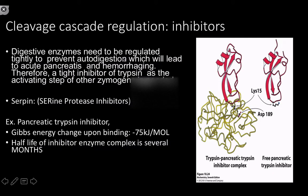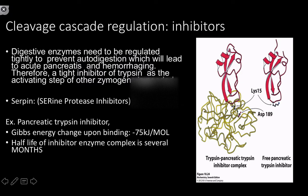If you had guessed an inhibitor, you would have been right. Specifically, serine protease inhibitors that have a negative 75 kilojoules per mole Gibbs free energy change upon binding — more energetically favorable than the hydrolysis of ATP. These enzyme-inhibitor complexes can last for months. Very strong inhibition is happening: the lysine interacts with an aspartate at the binding site, inducing a very strong enzyme-inhibitor complex. This is really important because autodigestion is a significant problem in certain diseases and pathologies.